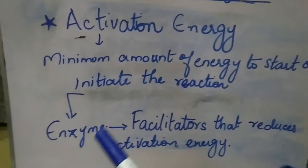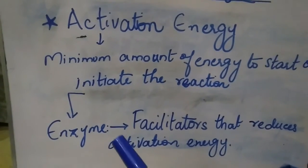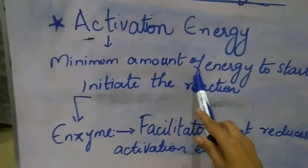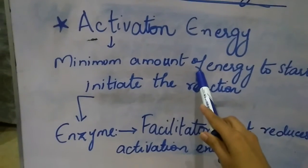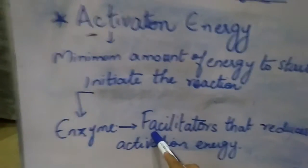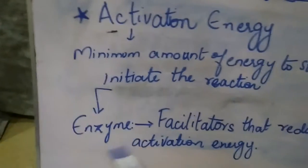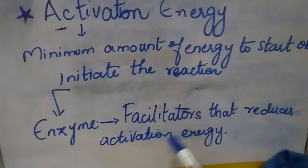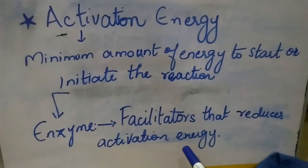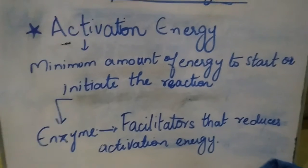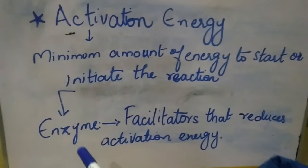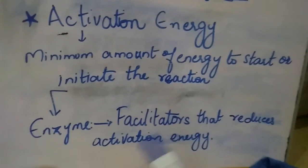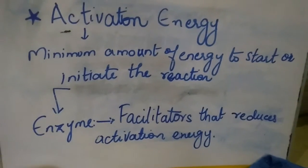So what is the role of enzymes? Basically, we need this minimum amount of energy to start a reaction, and this amount of energy cannot be achieved by an organism itself. So they need some facilitators or some help. That's why enzymes are those molecules that reduce activation energy — they decrease it — and because of that decrement in activation energy, the reaction takes place. Enzymes facilitate and help reduce activation energy, helping to start the reaction very successfully.